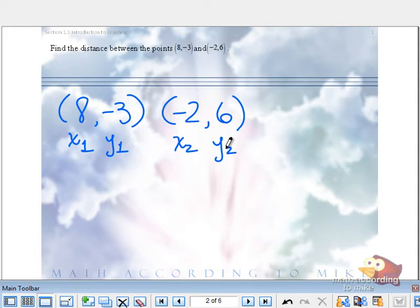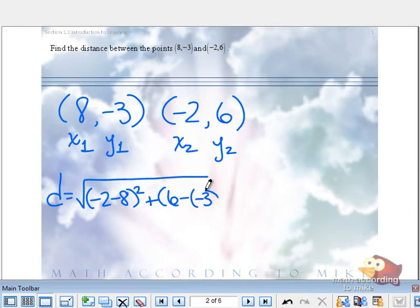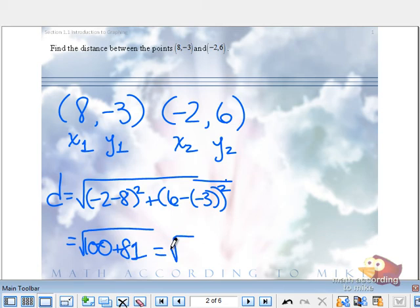So then what do we do with these four numbers and that formula? Plug it in. So D would be the square root of the difference of the x's squared plus the difference of the y's squared. Please notice when working with negatives, you should consider using parentheses as needed. What is negative 2 minus 8 quantity squared? Plus, what is 6 minus negative 3 quantity squared? What is 100 plus 81 in most countries? 181 does not have any perfect squares, I don't think. So we just leave it alone. Square root of 181.